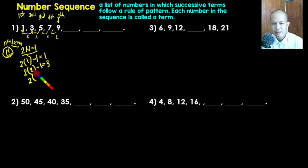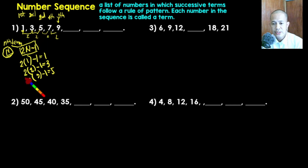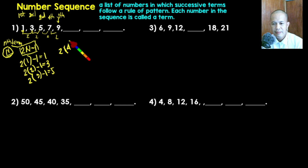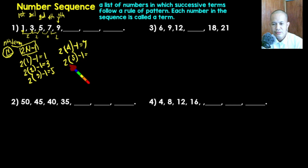For the third term, substituting n equals three: two times three is six, minus one gives five. We can confirm the formula 2n minus one is applicable to this problem. Continuing: two times four is eight, minus one gives seven — the fourth term. Two times five is ten, minus one gives nine — the fifth term. So we have the sequence: one, three, five, seven, nine.